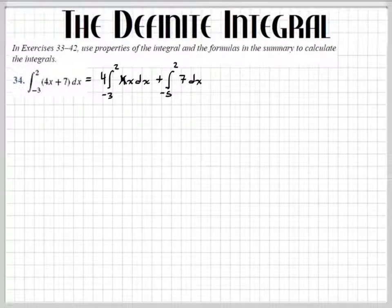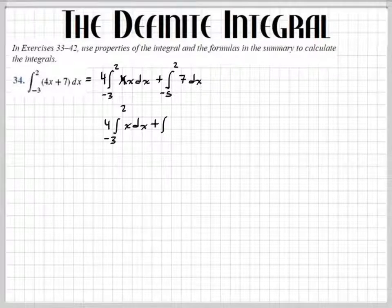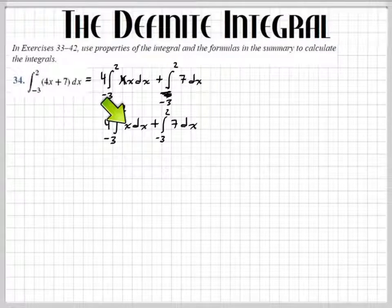And so this is what I have. I have 4, negative 3 to 2 of x dx, plus, wait, how's that at 5? Is that supposed to be a 5? No, it's supposed to be negative 3. And then negative 3 to 2, 7 dx. Okay, now there is, I think there is a formula for this one, but I'd rather look at it graphically to help you guys understand it.